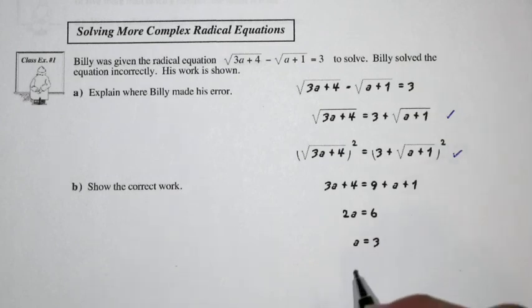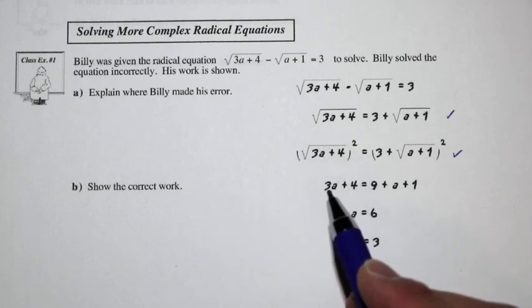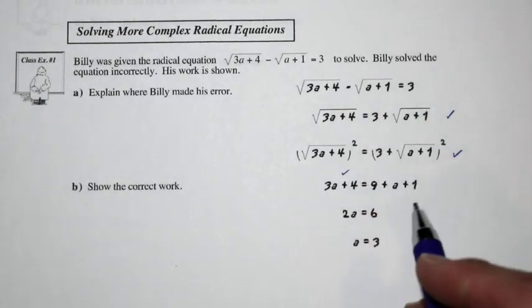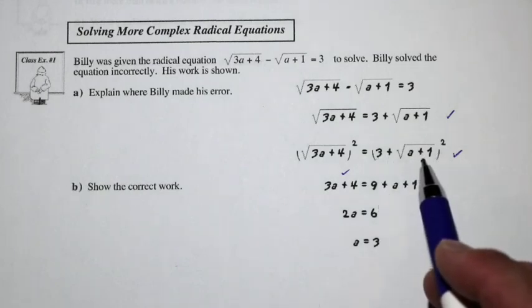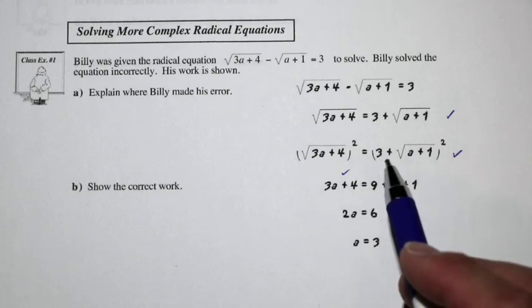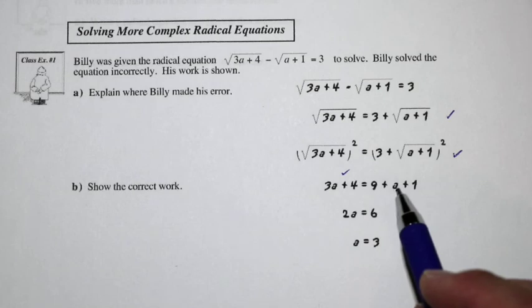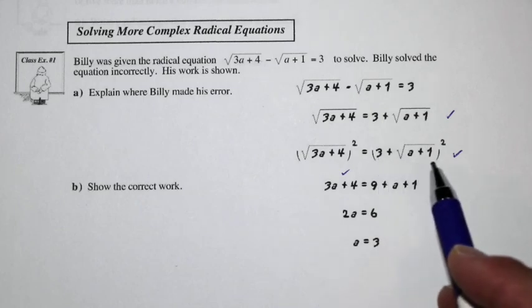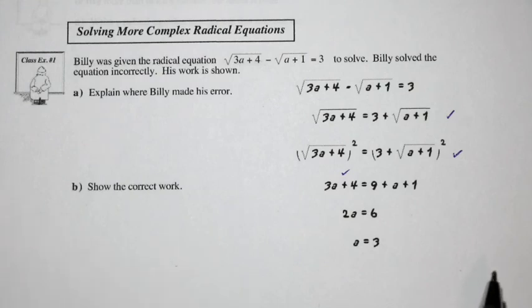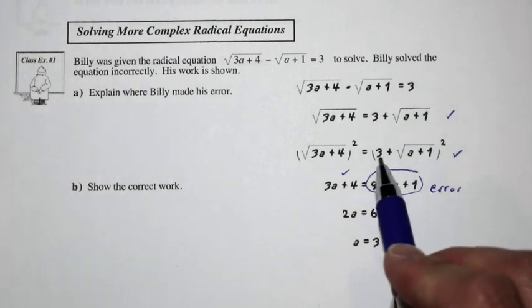On the left side, when you square a square root, you just end up with 3a plus 4. That looks alright. On the right side, we have a 9 plus a plus 1. But this is a binomial that's squared, so it's going to be a binomial times another binomial — 3 times 3, and then 3 times the square root of a plus 1. I think he mistakenly squared just each part separately and didn't realize it's a binomial times a binomial. That's the error right here — he failed to correctly square this whole side.